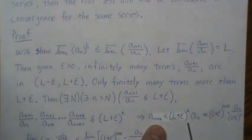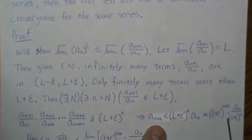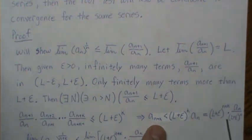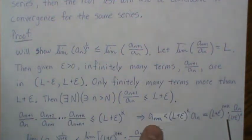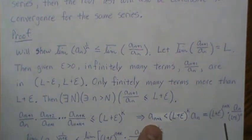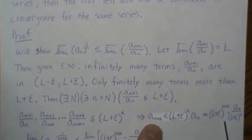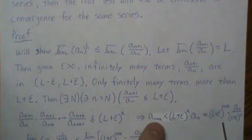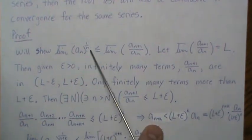We multiply the right-hand side by 1, which is (L + ε)^n raised to the nth power — that doesn't change the inequality. So we get A_{n+K} is less than this expression. Now we want to take the (n + K)th root of both sides, and then let K go to infinity — that's what we want to find.